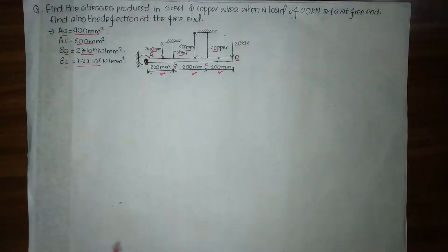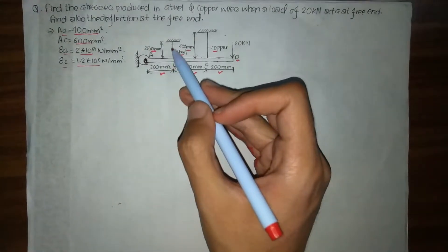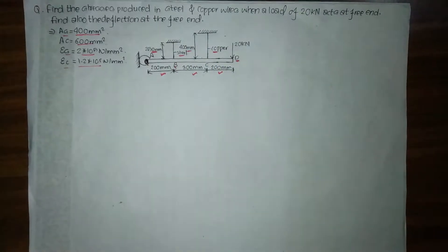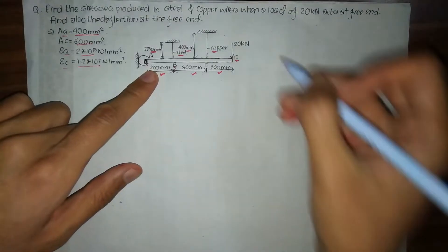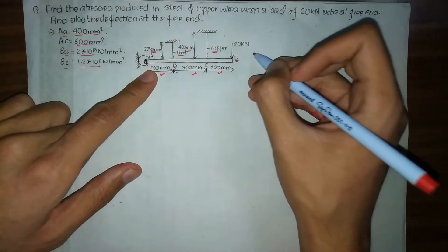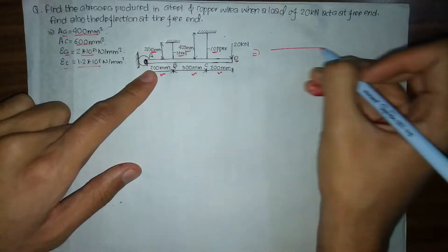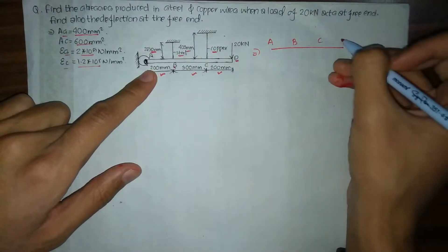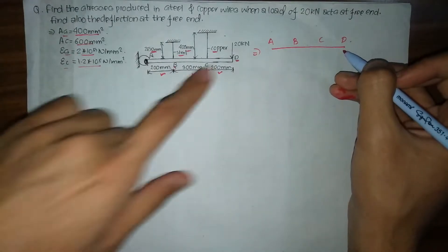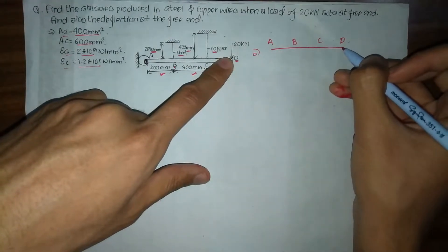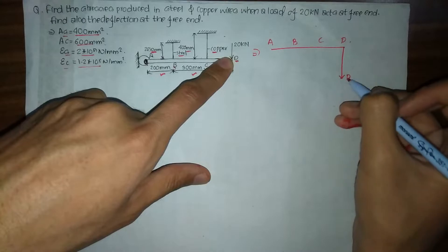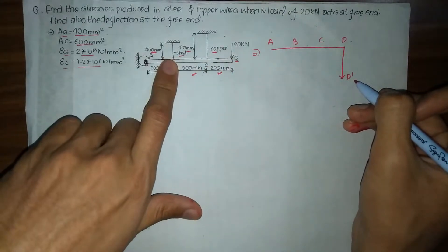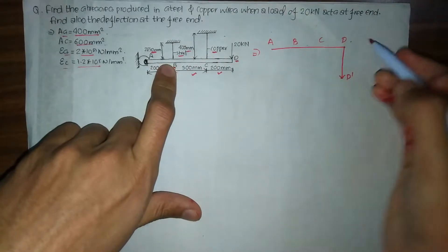According to our question we have to find the stresses produced in the steel and copper wire and also find the deflection at the free end. We are going to redraw this figure. We have portions A, B, C, and D, with the 20 kN force acting downward at D, denoted as D dash. We have our steel and copper bars at B and C.